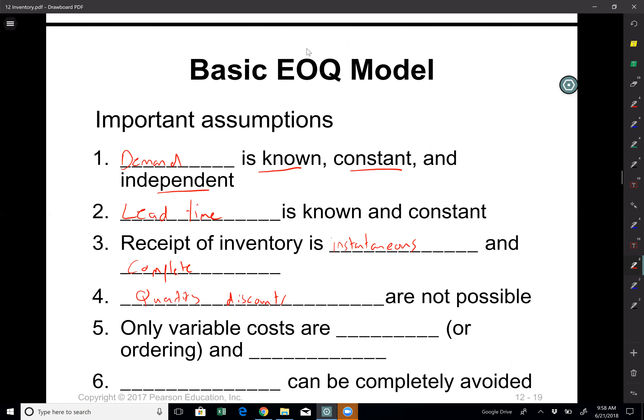And another assumption here is that only variable costs are setup or ordering costs, setup costs for production, ordering costs for buy decisions and holding costs. These are the two different types of costs that we will consider.